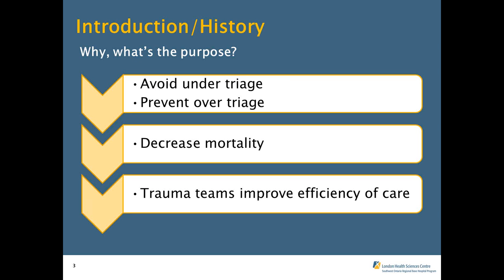Surgeons have set up a standard: you want to avoid under-triage of about 5%, making sure you're not missing patients that really need to get to the trauma center. There's a mortality associated with an odds ratio of 7.1 if you need to go and are under-triaged away from that Level 1 trauma center. Over-triage should be limited to the 10–50% range. The essence of these documents is trying to define the trauma population.